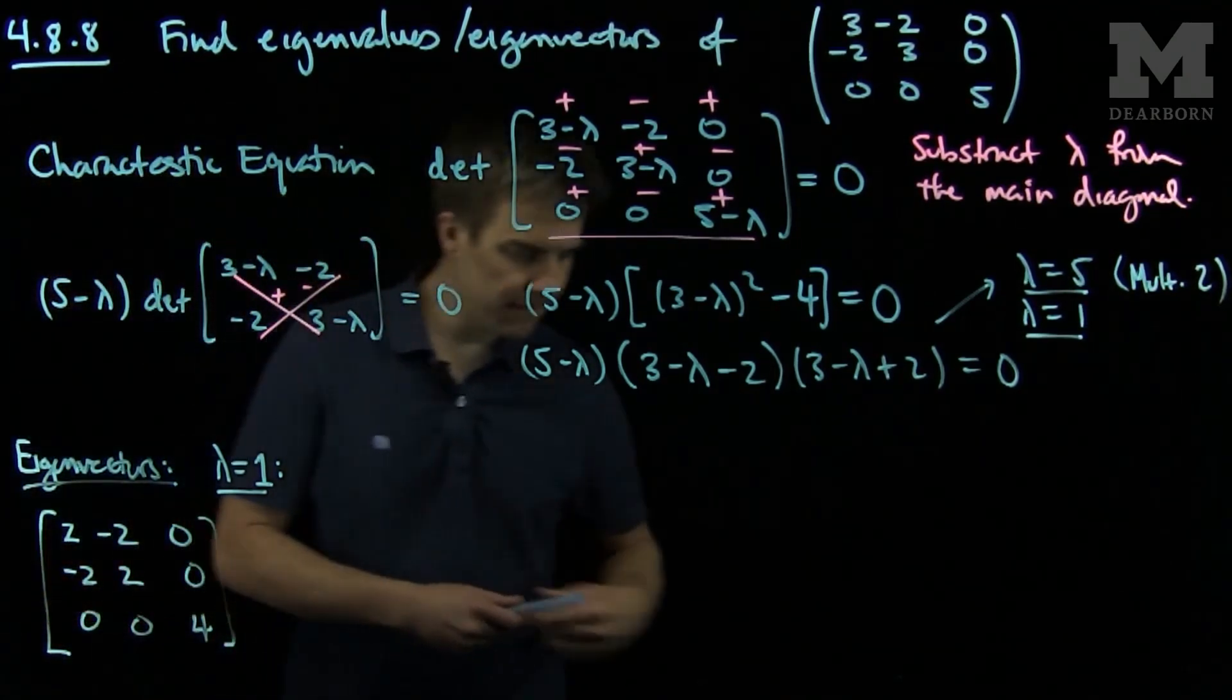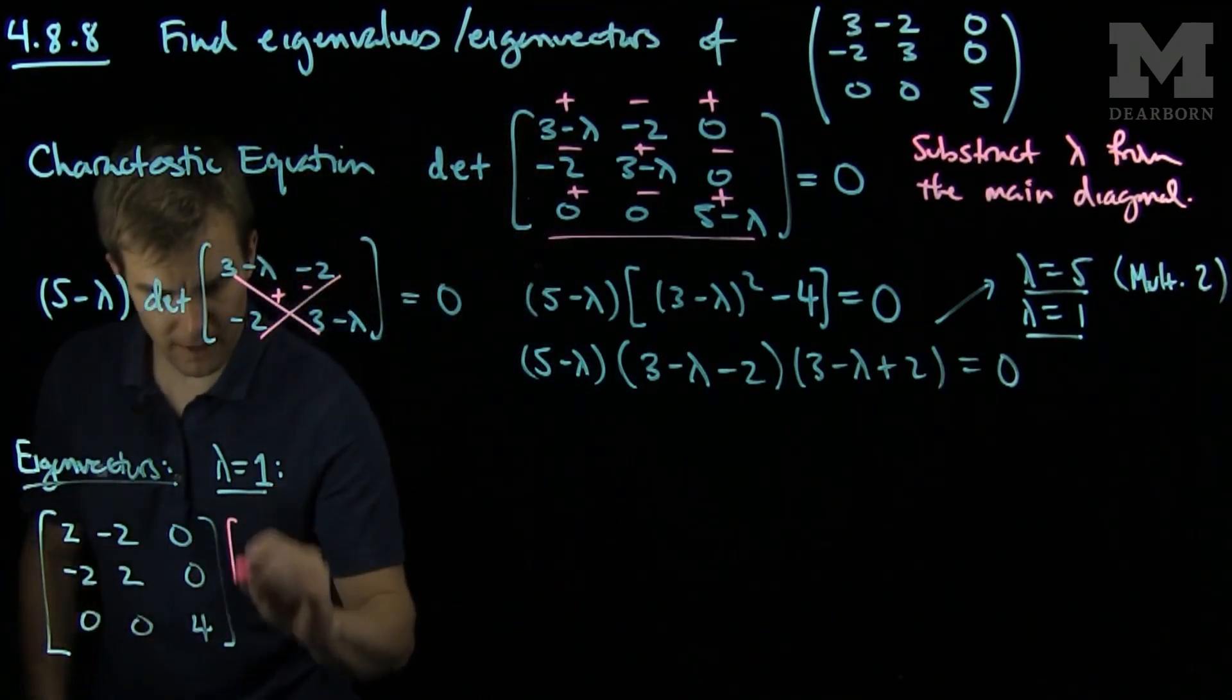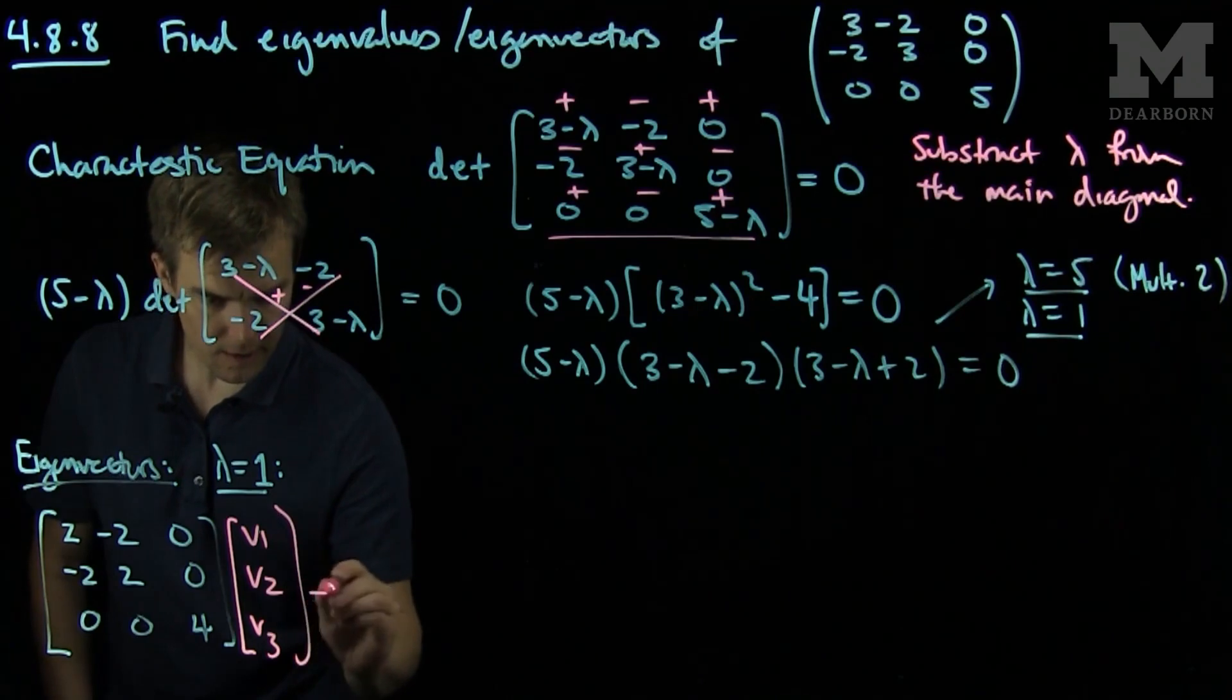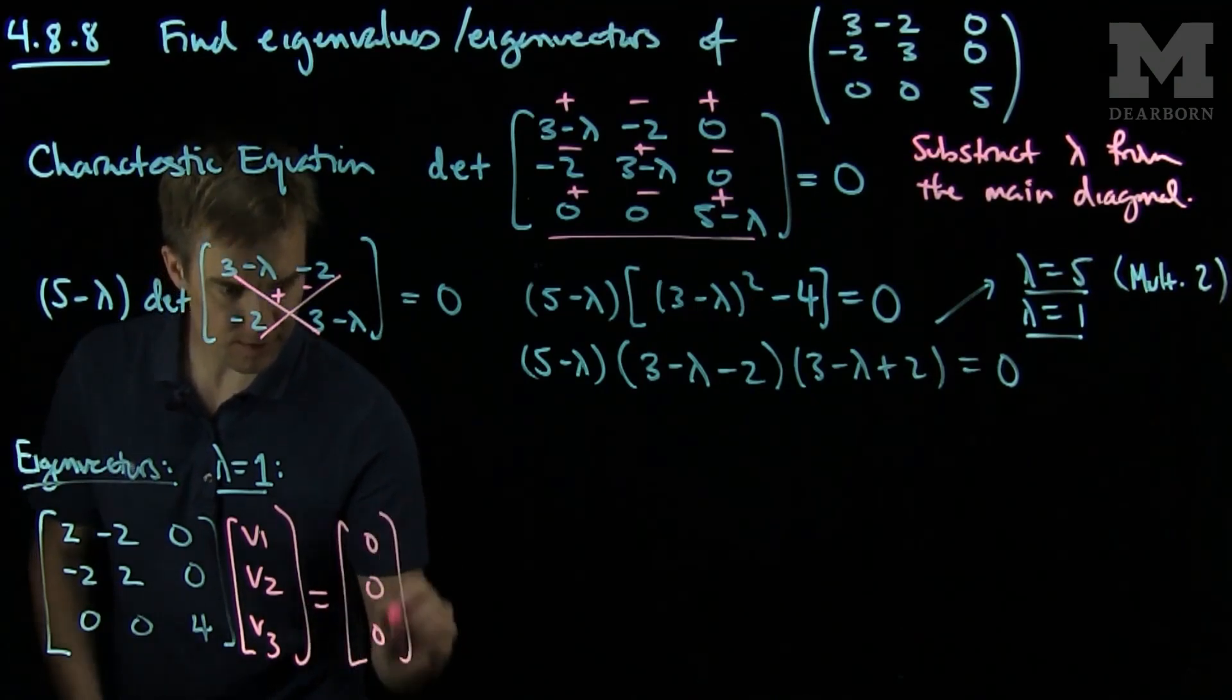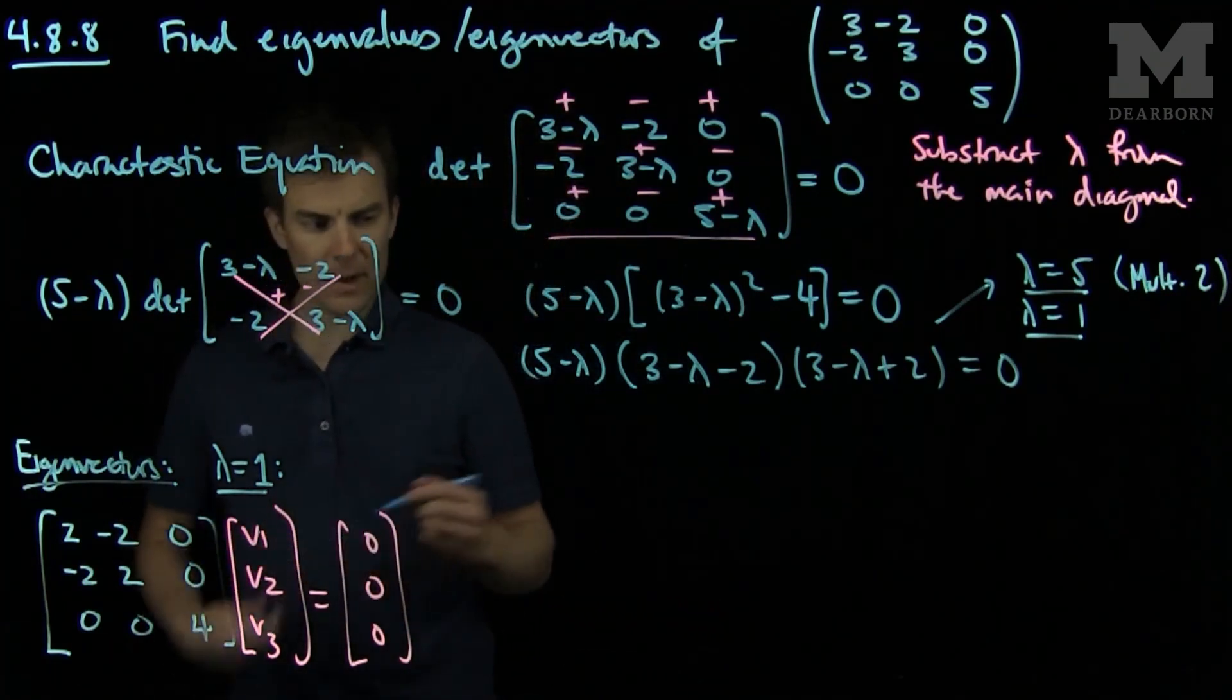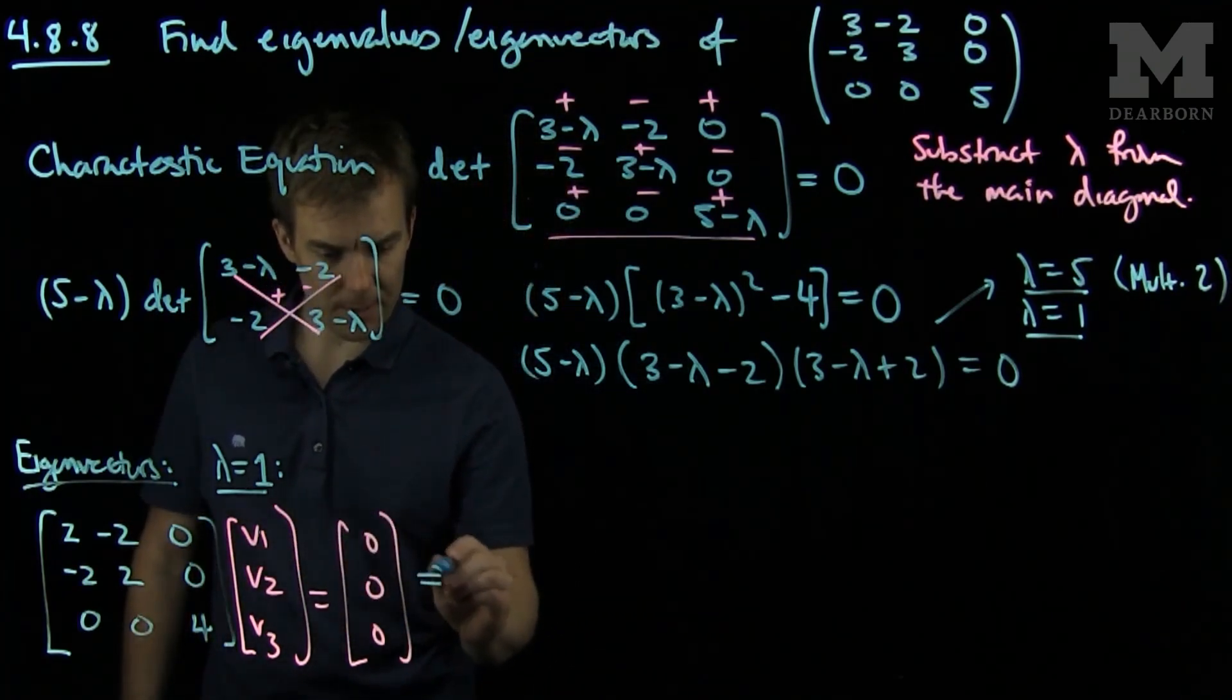And I'd like to find a vector v1, v2, v3 in the null space of this matrix. That means that I get 0, 0, 0. And we can see that an elementary choice to make this happen...